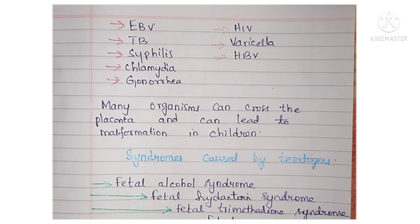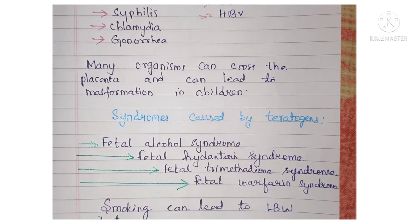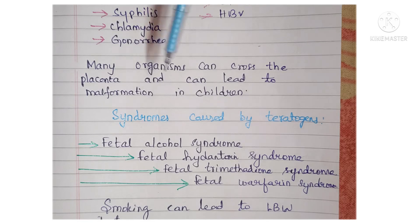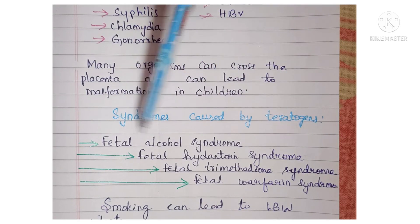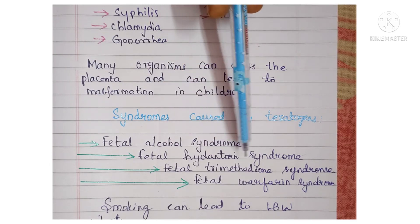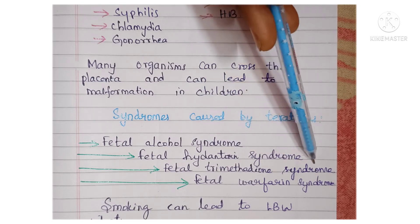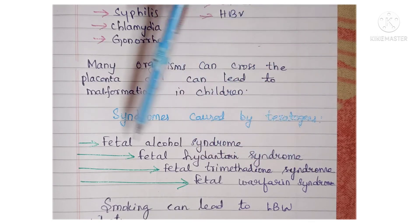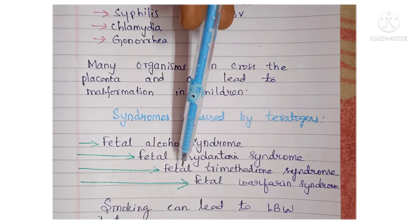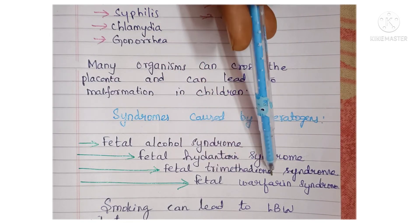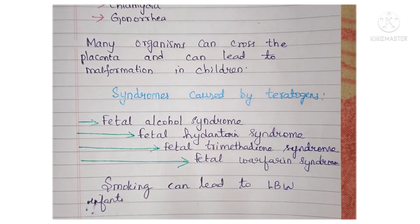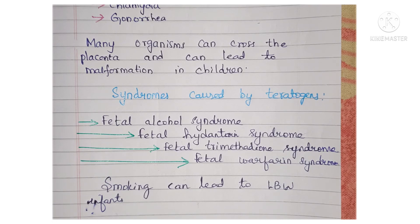What are the syndromes caused by teratogens? A syndrome is a group of symptoms or conditions. Some syndromes caused by teratogenic substances include fetal alcohol syndrome, fetal hydantoin syndrome, fetal trimethadione syndrome, and fetal warfarin syndrome. Smoking can also lead to low birth weight infants. These are some of the etiological agents which can lead to malformations or structural defects of the fetus.